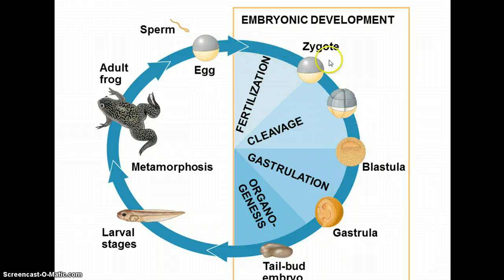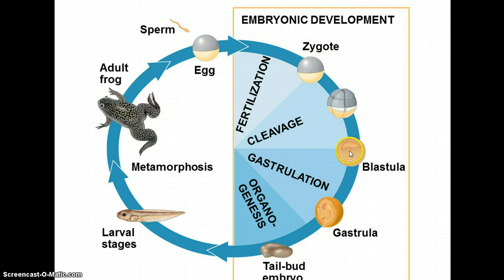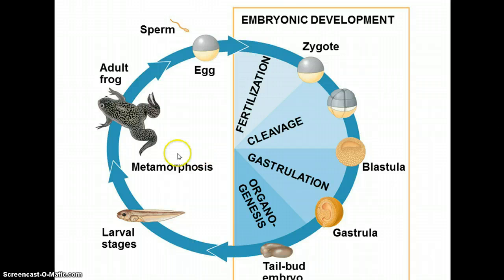This is the general pattern that animals follow in embryonic development. It starts with fertilization of the egg to form the zygote. Then the zygote goes through cleavage, the splitting into multiple cells, ultimately forming the blastula or blastula stage — the hollow ball stage. Then you go through gastrulation, where cells begin to migrate and move around the blastula, beginning the formation of different organs. In some animals, this includes metamorphosis from a juvenile to an adult stage, though not all animals go through metamorphosis — mammals do not.